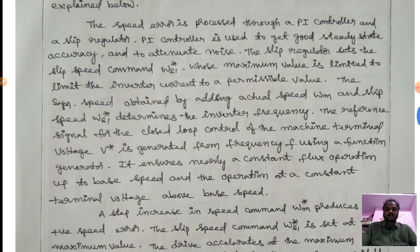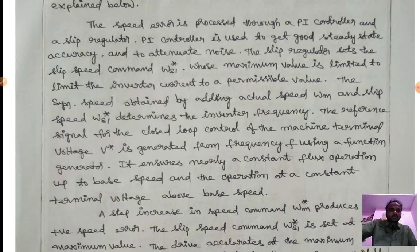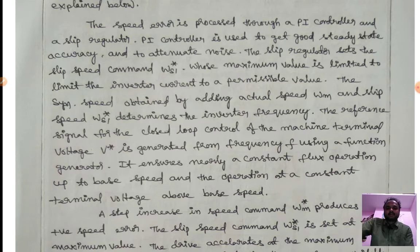The drive operation is as follows: first, the speed error is processed through a PI controller and slip regulator. The PI controller is used to get good steady-state accuracy and attenuate noise. The slip regulator sets the slip speed command WS1, whose maximum value is limited to keep the inverter current within a permissible value.